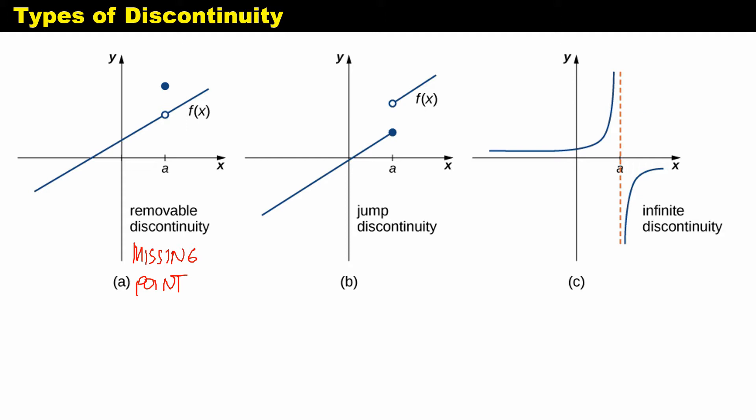It's very easy to identify the point of discontinuity and its type when you are given the graph of the function. But what if you're not given the graph? Does that mean that we have to graph the function and then identify the point of discontinuity and its type? That is a very tedious process.